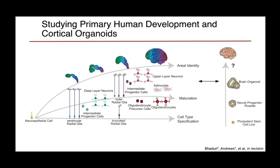Cortical organoids are in vitro models generated from pluripotent stem cells that enable the generation of neural progenitor rosettes, which are then created into three-dimensional organoids. These organoids are being used as models not only of development but also of a variety of diseases. We think it's important to really benchmark these organoids to better understand how their cell types and trajectories mimic those in normal development, in order to create the best model and the best conclusions from the data we observe.